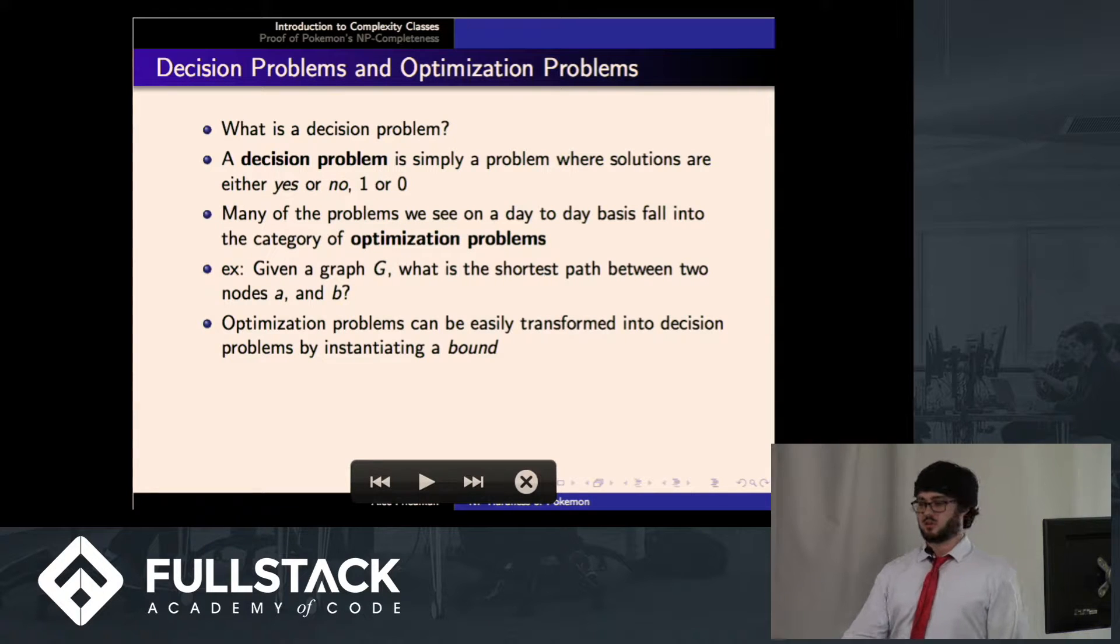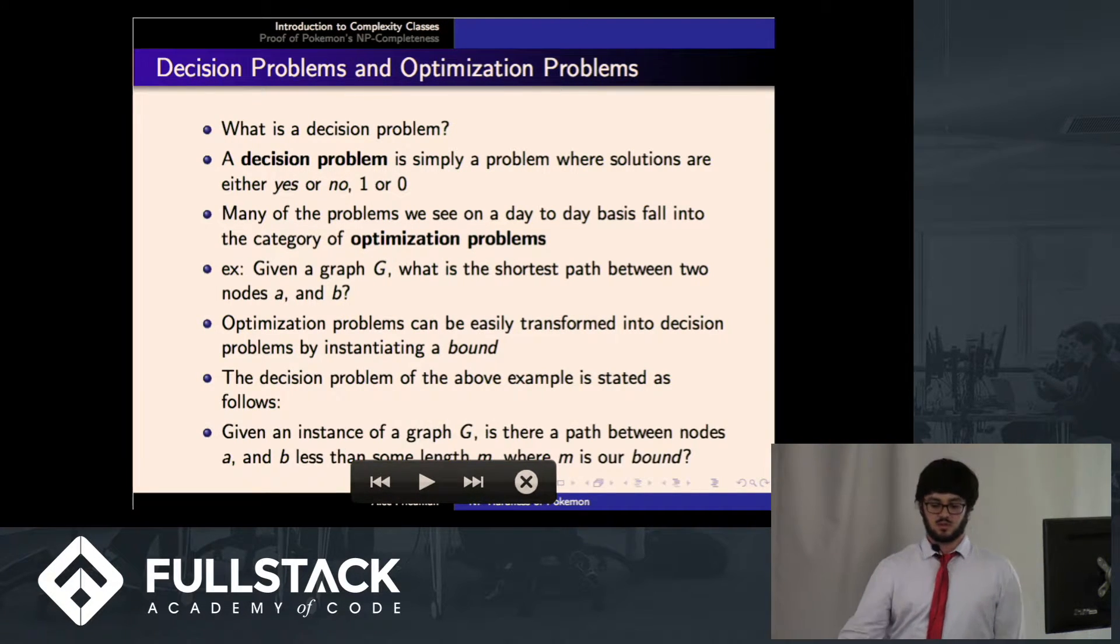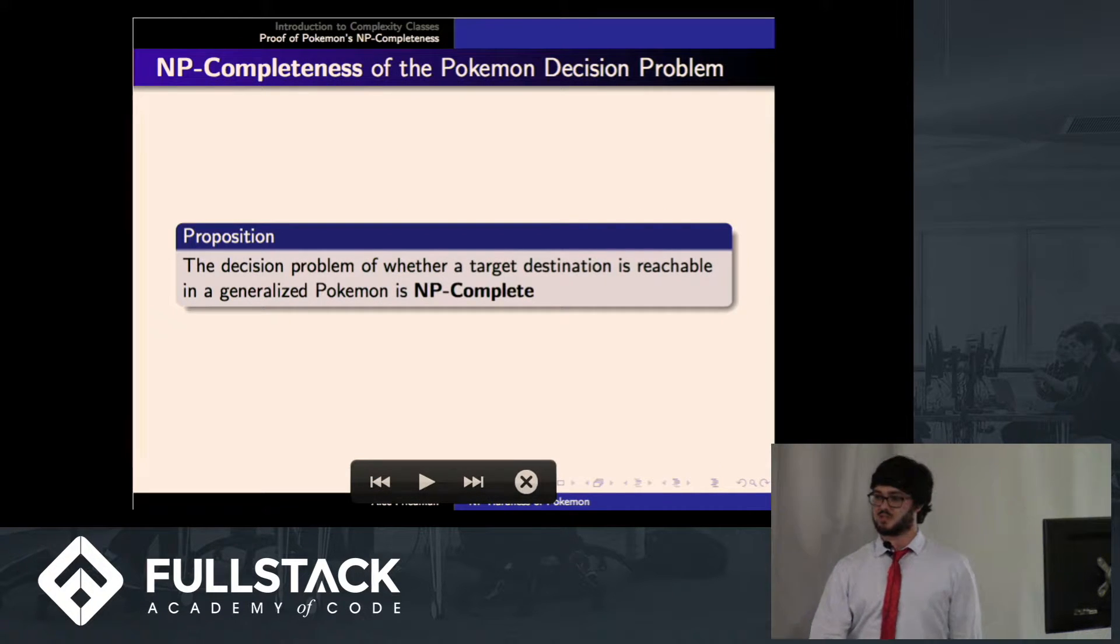So we can transform optimization problems into decision problems by instantiating a bound. So the decision problem of the above example basically states, given an instance of some graph G, is there a path between two nodes A and B less than some length M, where M is our bound? So today, for this proof, we're going to be investigating, given a Pokemon game state G, is it possible to get from point A to point B? And there's a few things that are going to be worth noting with this Pokemon game state. But I'm going to state this proposition, which says, the decision problem of whether a target destination is reachable in a generalized Pokemon is NP-complete.